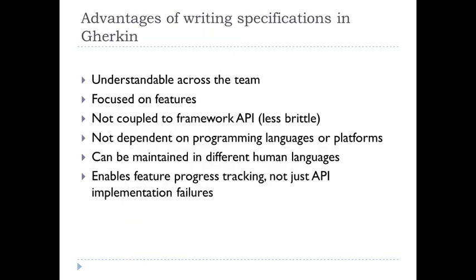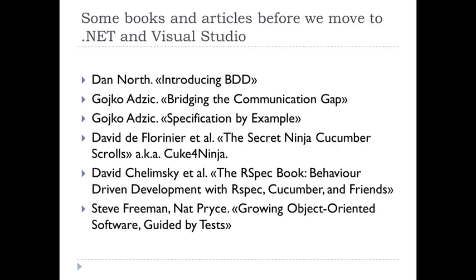The main advantage of writing specifications in Gherkin is that it helps communication across the team. It's not coupled to frameworks or programming languages. You can print it as a text document, bring it to a different project, and both Ruby, Java, and .NET teams can work with the same specification written in Gherkin. If you want to find out more about BDD, Gherkin, and Cucumber, there are some resources I highly recommend — probably the originating article is Dan North introducing BDD.